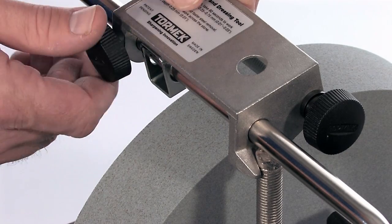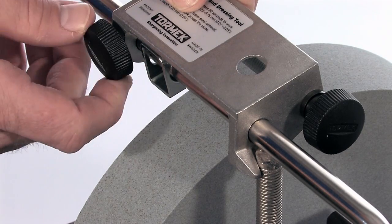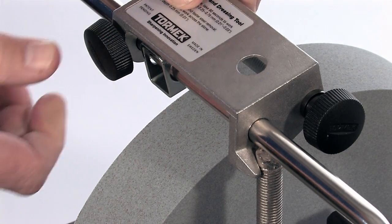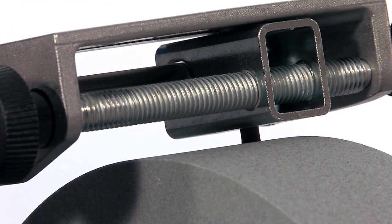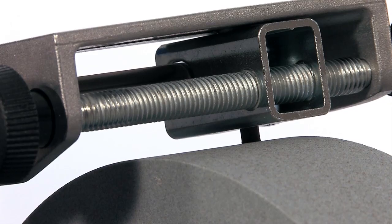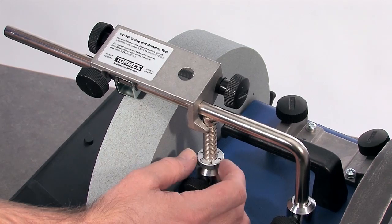Fit the fork around the leg and lock it into position. Lower the universal support until the diamond cutting tip is resting on the highest spot on the grindstone.